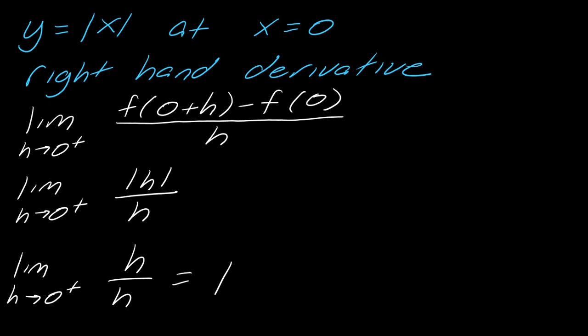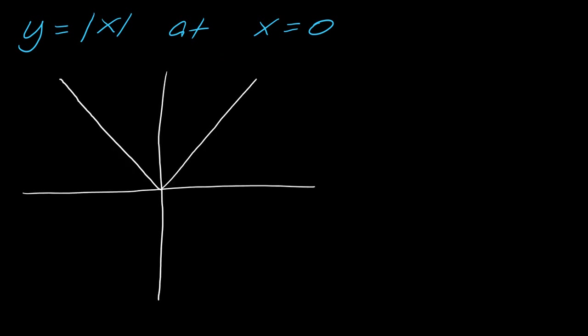So this means that on the right side of zero, the derivative on that side would have a slope of one at zero. So does this make sense?